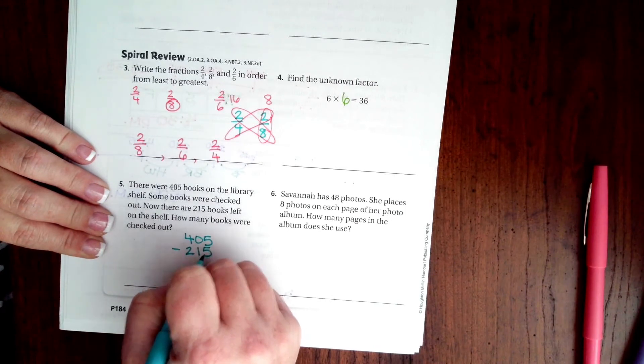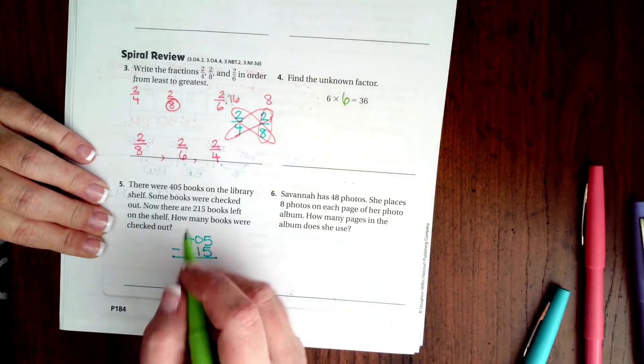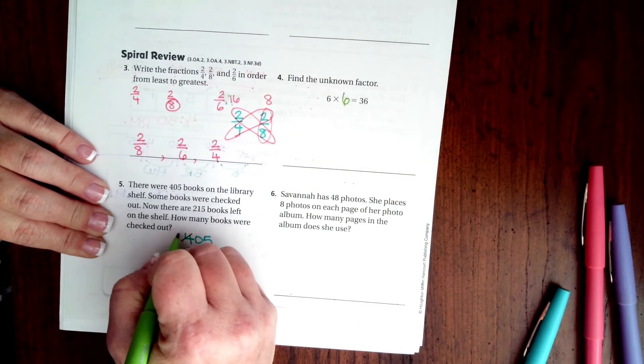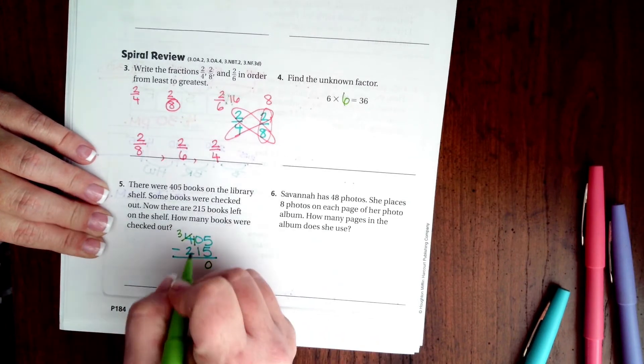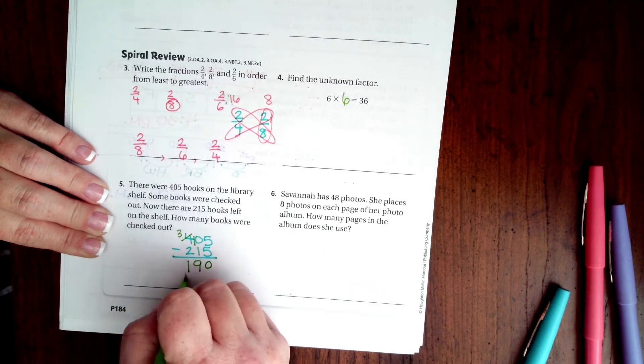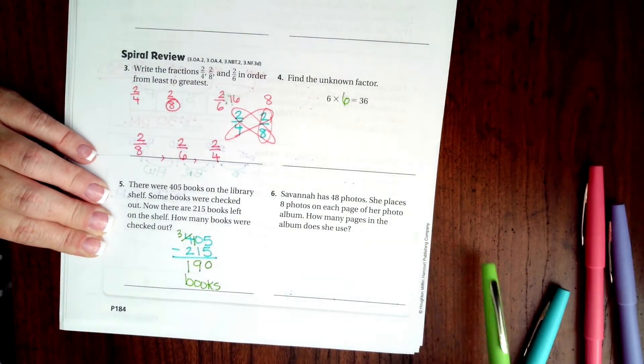That'll give me the difference. 5 minus 5 is 0. 0 cannot take away 1, so I'm going to borrow. That makes it a 10. 10 minus 1 is 9, and 3 minus 2 is 1. 190 books.